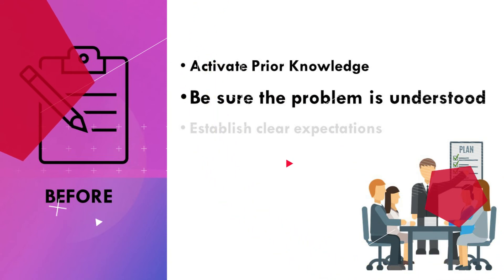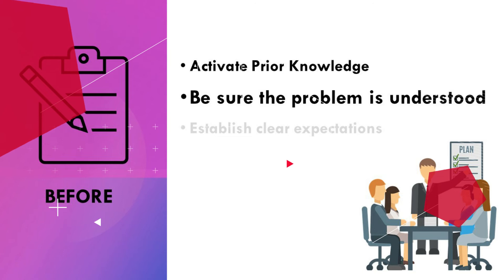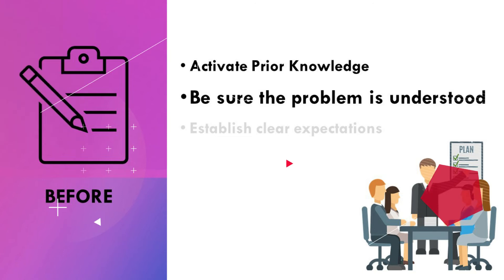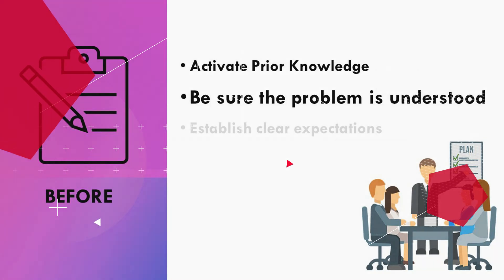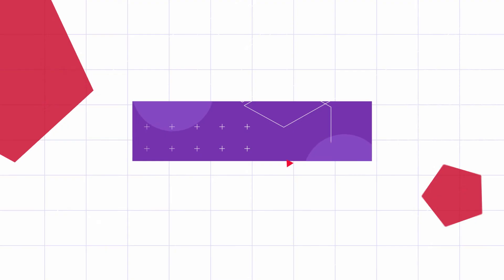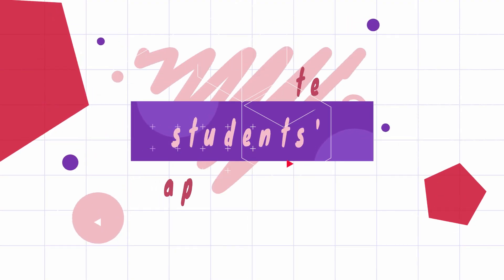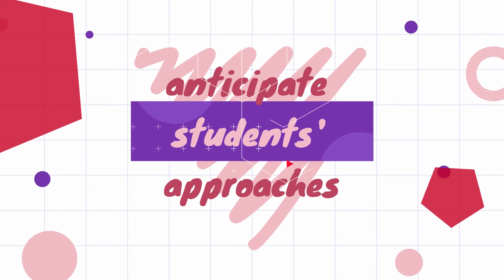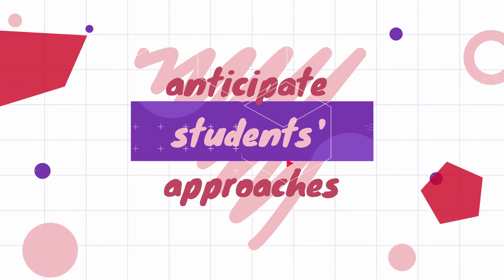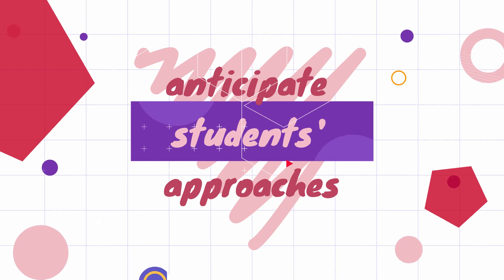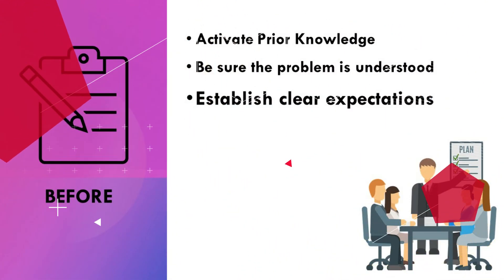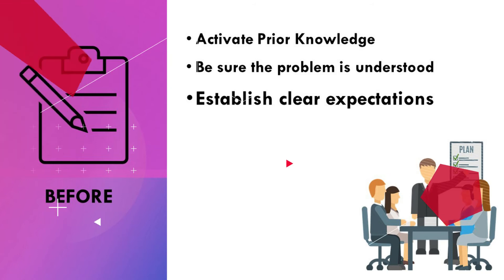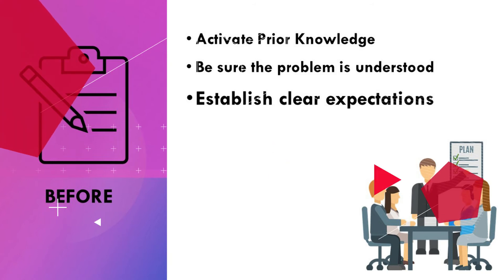Number two, be sure the problem is understood by the learners. Always make sure that learners understand the problem before setting them to work. As a teacher, analyze it first to anticipate students' approaches and possible misconceptions and misinterpretations. And number three, establish clear expectations — how learners are to work and what products they are going to prepare for the discussion.